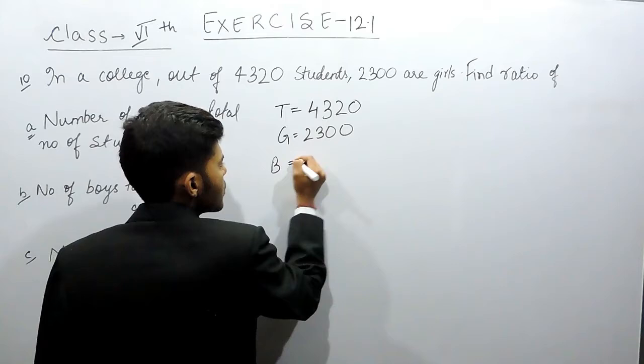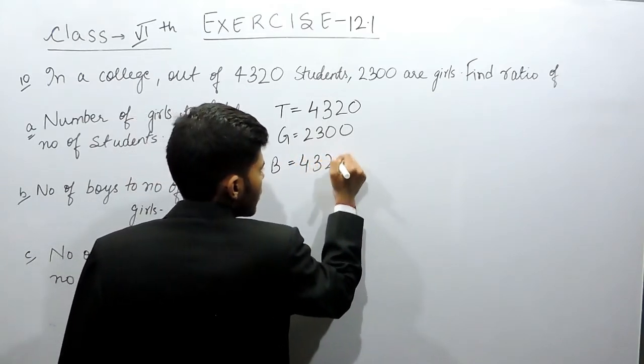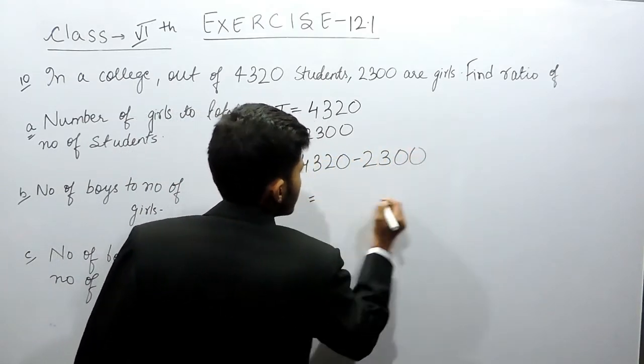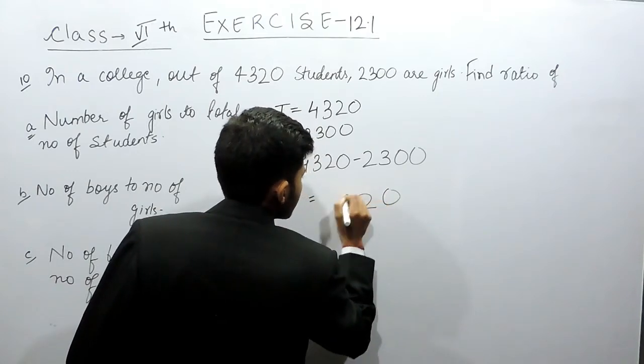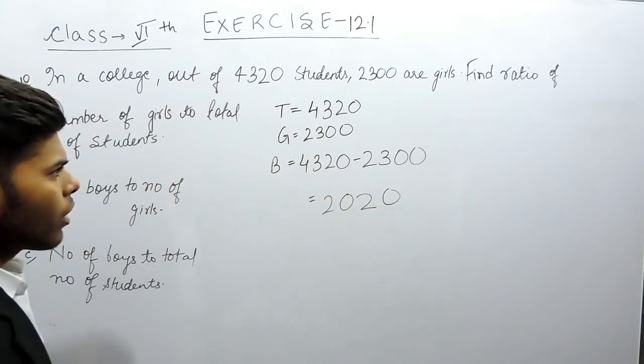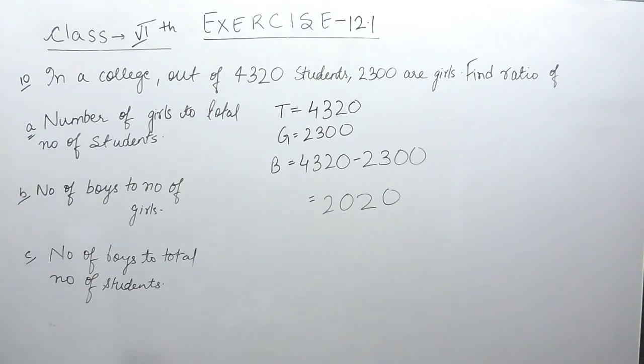That means boys will be equal to 4320 minus 2300, that will be equal to 2020. So 2020 are boys and the rest of them are girls.